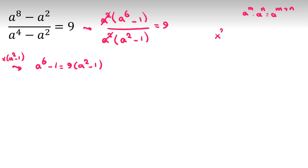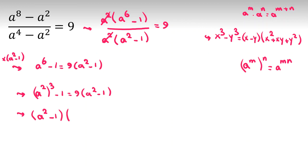We have a famous identity that x cubed minus y cubed equals x minus y times x squared plus xy plus y squared. Here, a to the 6 by another power rule, we can say a to the 6 is a squared cubed minus 1 equals 9 times a squared minus 1.